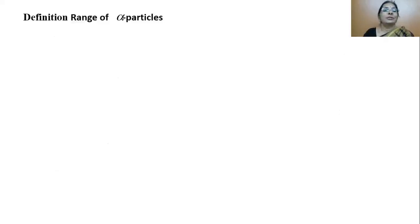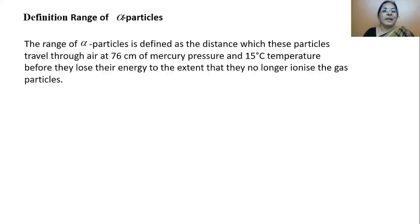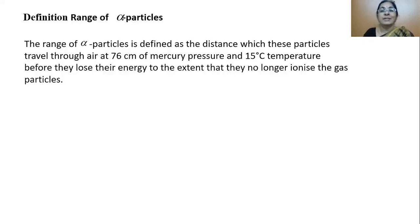Definition — Range of alpha particles: The range of alpha particles is defined as the distance which these particles travel through air at 76 centimeters of mercury pressure and 15 degrees Celsius temperature, before they lose their energy to the extent that they no longer ionize the gas particles.